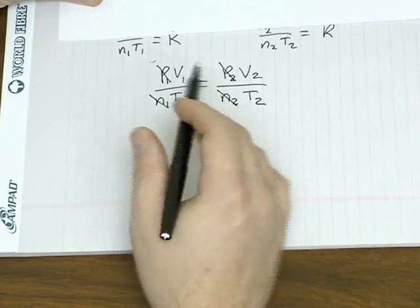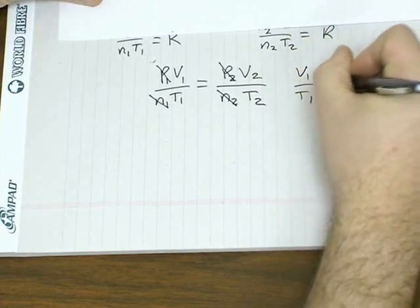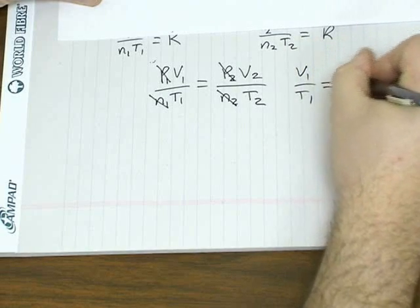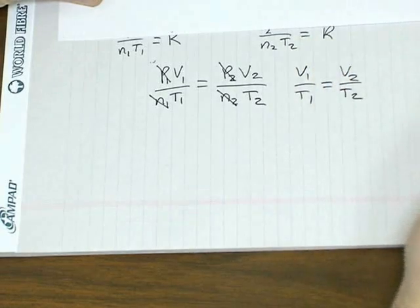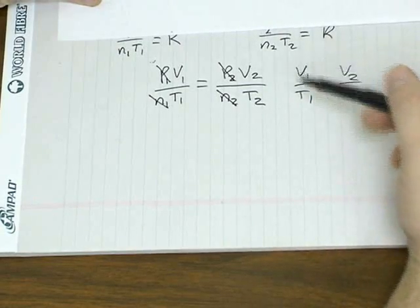let's say you take an amount of gas and you hold the pressure constant and you hold the amount constant. Again, if those two variables remain constant, they can drop out of the equation and you're left with V1 over T1 equal V2 over T2. You may recognize that as Charles' law, which relates volume and temperature.